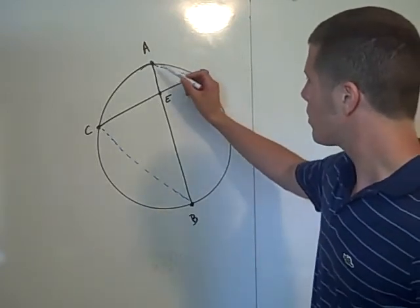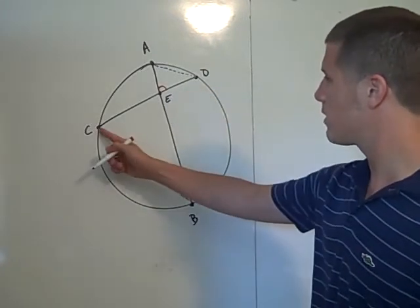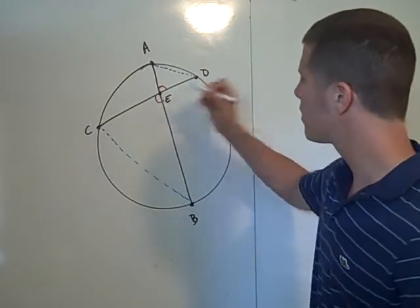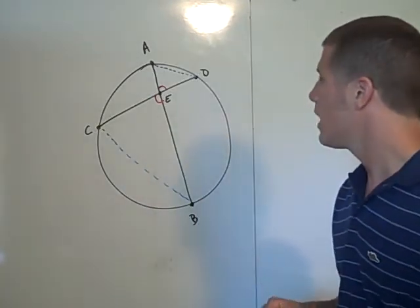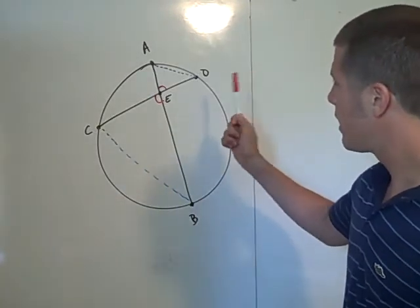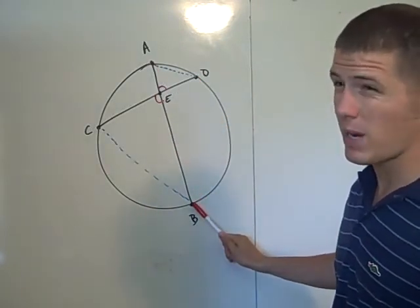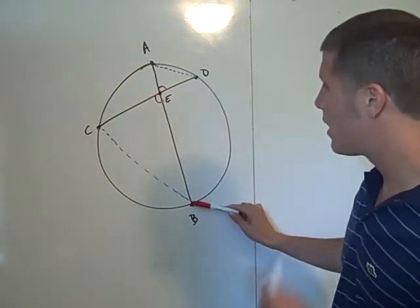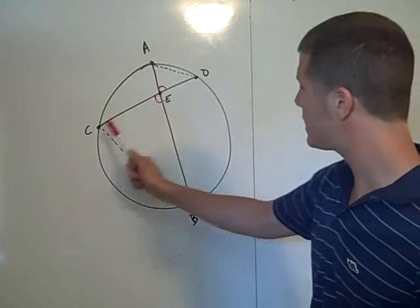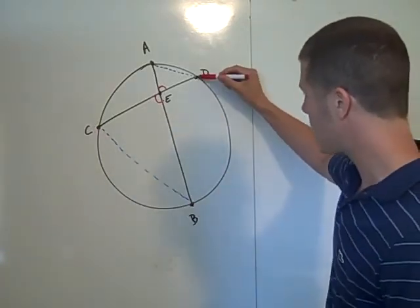So angle AED is congruent to angle CEB by the vertical angle theorem. And then notice that angle DAB is an inscribed angle that intercepts the arc DB. But also angle DCB is an inscribed angle that intercepts arc DB.